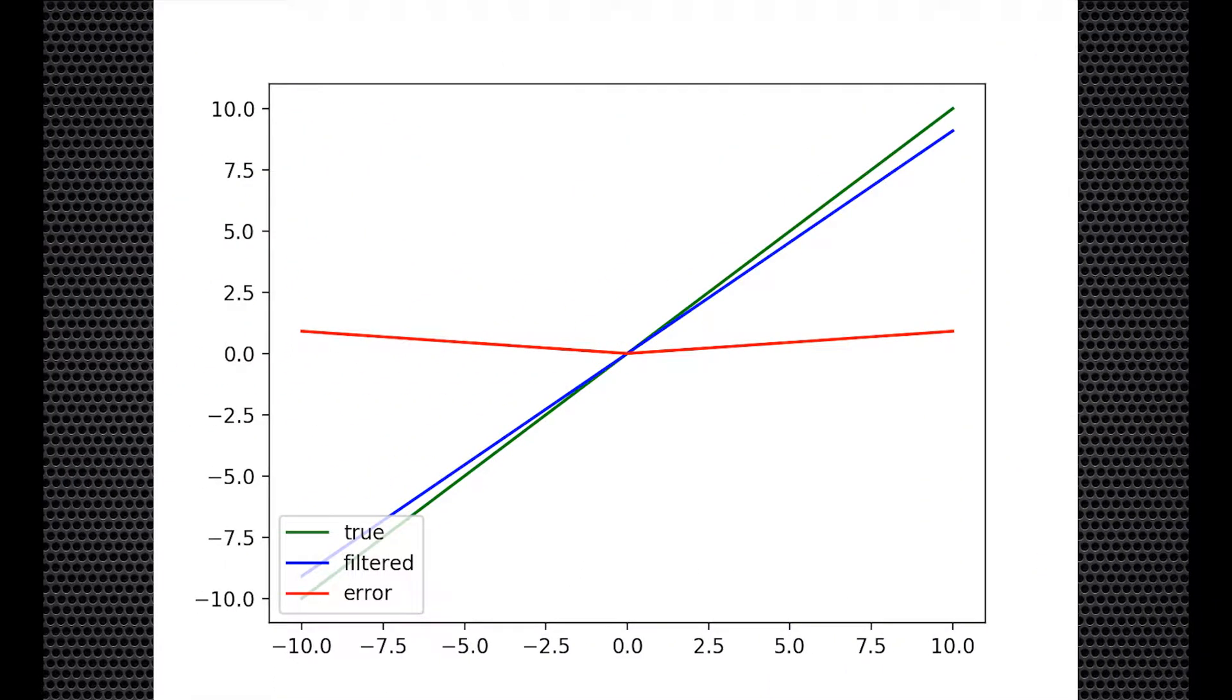This is the result of the unscented Kalman filter estimating a linear function. Note that it does not perfectly solve even this rudimentary problem and still contains error. It's very close, but the slope of the estimated line is not quite correct. The error is low but certainly nonzero.